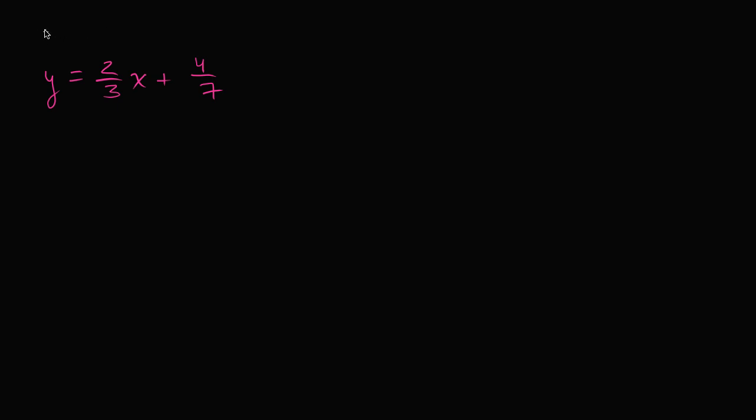It's written in the form y equals mx plus b, where m in this case is 2/3 and b is 4/7. It's very easy to figure out what the slope and what the y-intercept is from this equation.